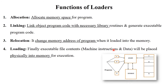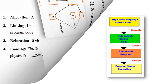The fourth function is loading — the executable file, which contains machine instructions and data in binary format, is physically placed into memory for execution. So the loader performs these tasks sequentially: first allocation, then linking, then relocation, and finally loading the file into physical memory for execution.